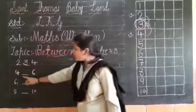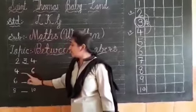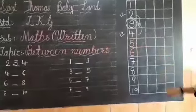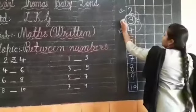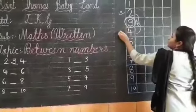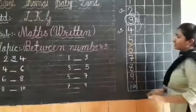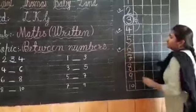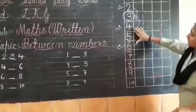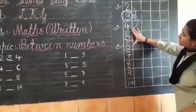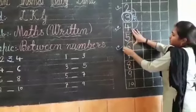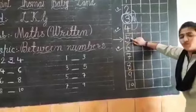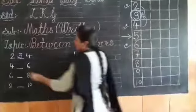In between of four and six, which number is there? Four and six — then five. Here is four, and here is six. Which number is in between of four and six? There is five. Our answer is five.